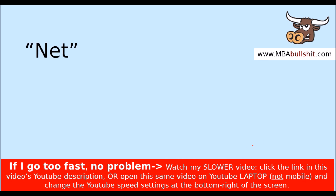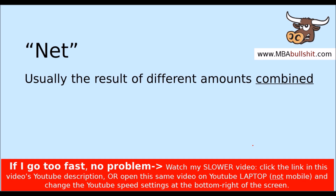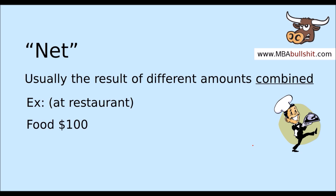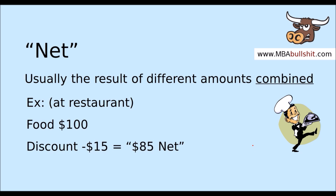I'd like to start with the word 'net.' What do we mean by net? Well, it's usually the result of different amounts combined. Let's say you're at an expensive restaurant and the food is $100 but you have a $15 discount. Then we can say that the price is $85 net.